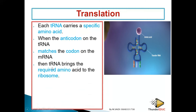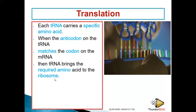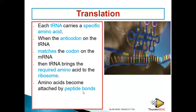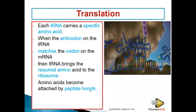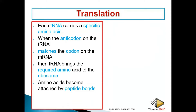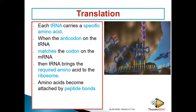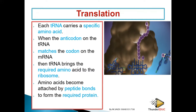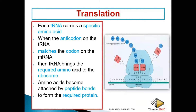Just like a key, the other one will not enter or open. When the anticodon on the transfer RNA matches the codons on the messenger, the transfer RNA will bring the required amino acid to the ribosome. The amino acids then become attached by a peptide bond — we call it a peptide bond, not a polypeptide bond. If there are many, we call them peptide bonds.